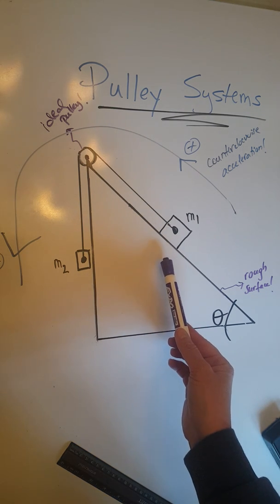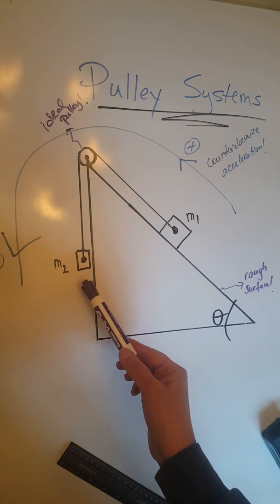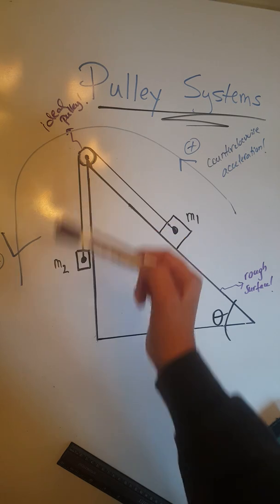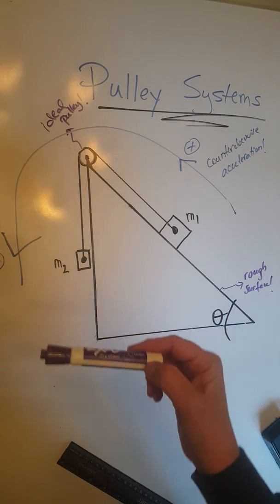M1 is in contact with the ramp, M2 does not touch any surface. This is an ideal pulley, like all the pulleys in our problems. As a reminder, ideal pulleys are massless and frictionless.